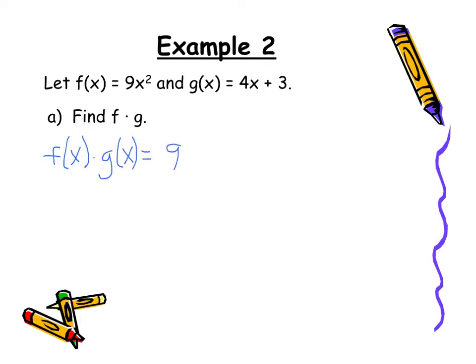Well that's going to be 9x squared. And with multiplication we're always going to use parenthesis. So 9x squared times 4x plus 3.